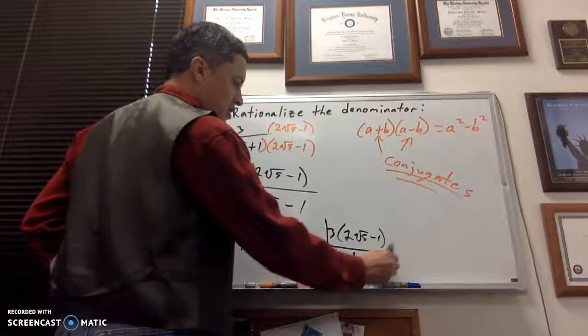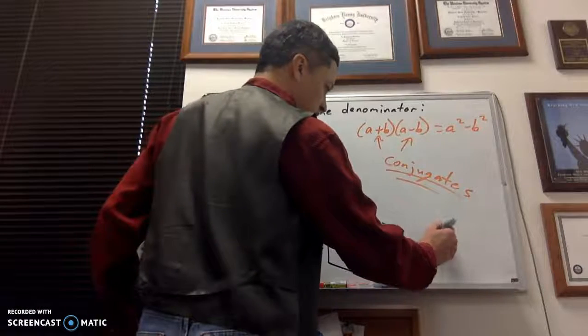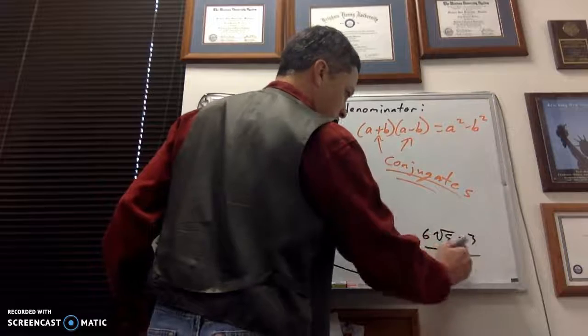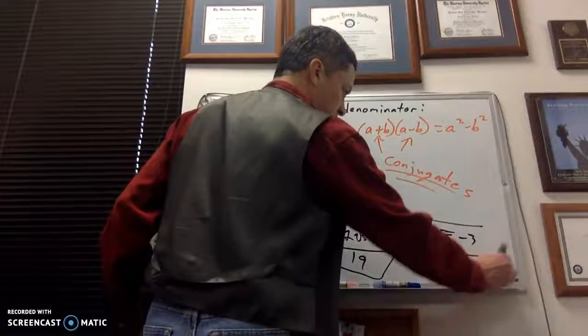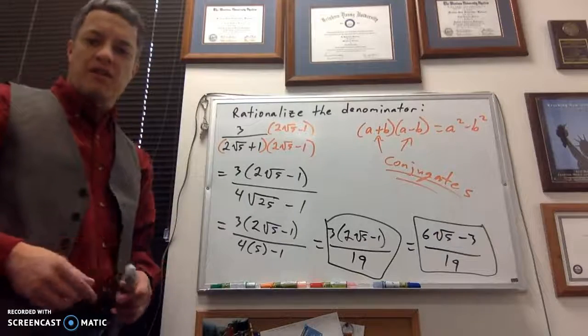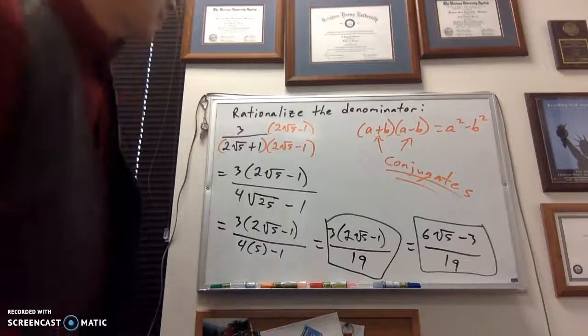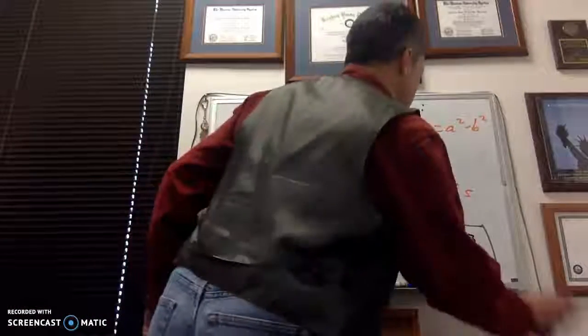So that guy's done. If you want to distribute the 3 through now and get 6 root 5 minus 3 over 19, that's fine. They're equivalent statements, and you should be okay with either answer. How long is this video getting to be? You know what? So, let me erase this and try another one, okay?